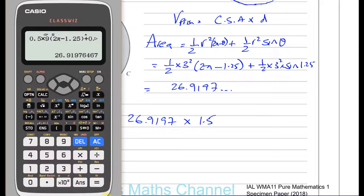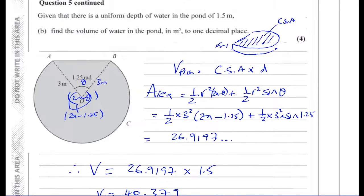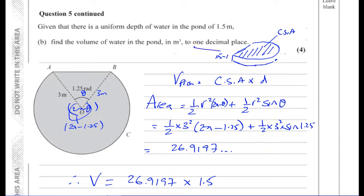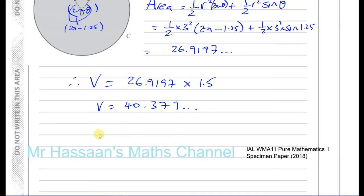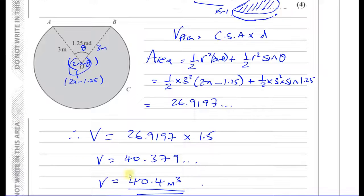The volume is 26.9197 × 1.5 = 40.379 meters cubed, which rounds to 40.4 meters cubed to one decimal place. That is the answer to the whole question.